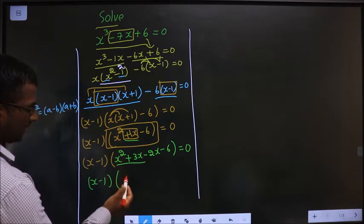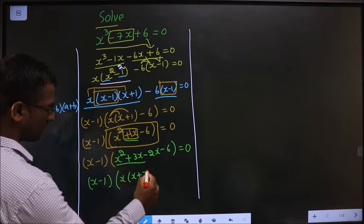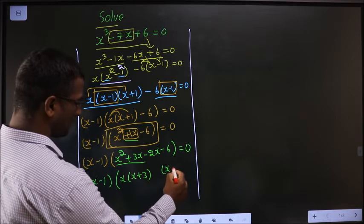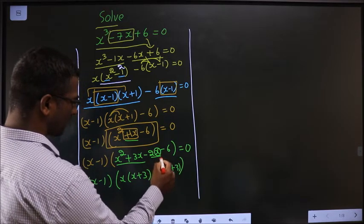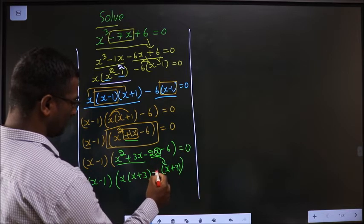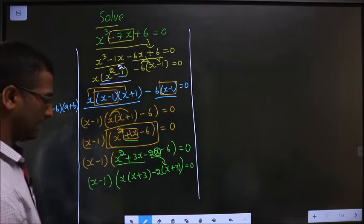Now, what can I take common from these two? X. So I am left with x plus 3. Here I am left with x plus 3, means here also it should be x plus 3. From this, x has gone inside means outside should be minus 2. Equal to 0.